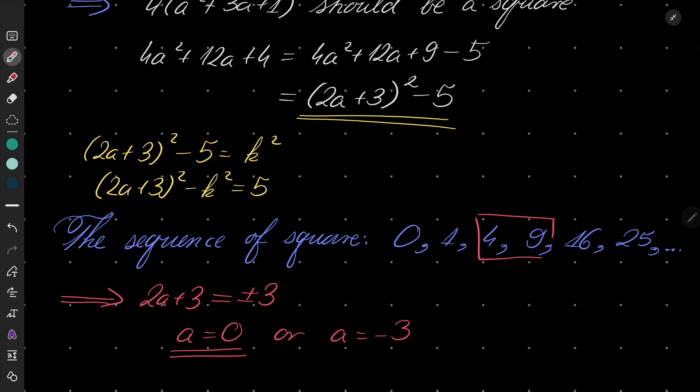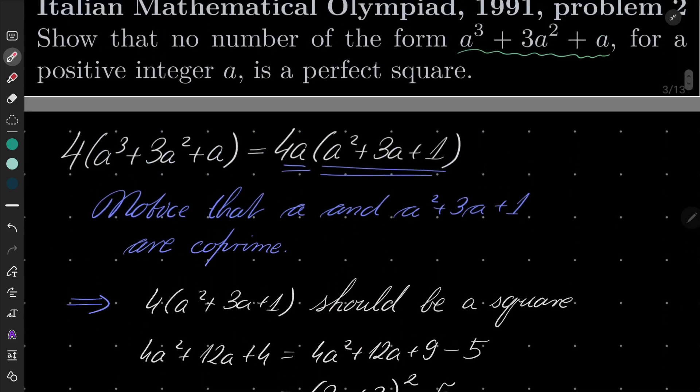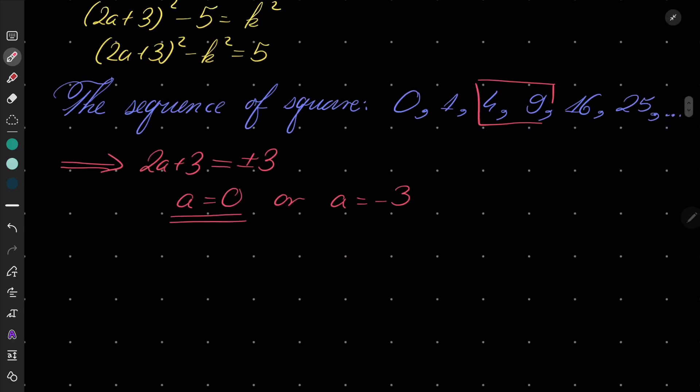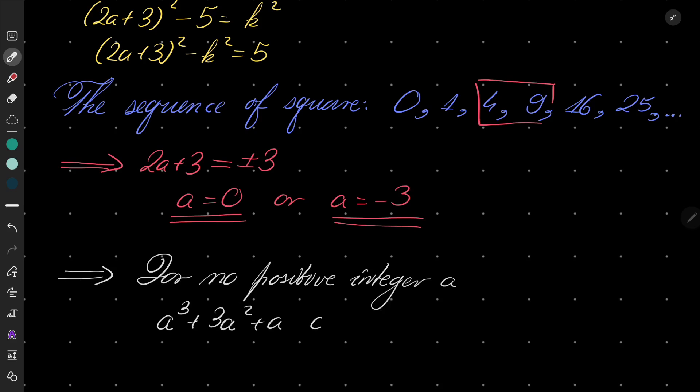In the case of a = 0, we are not considering this case because we are dealing with positive integers. And -3 isn't positive as well. Which means that for no positive integer a, a³ + 3a² + a can be a perfect square.